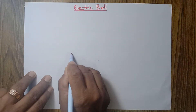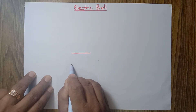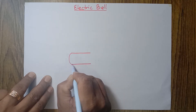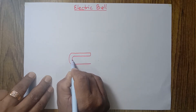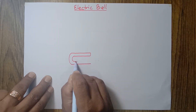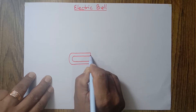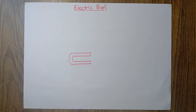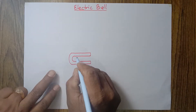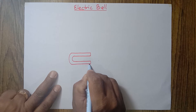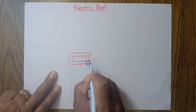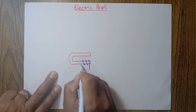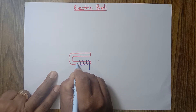An electric bell consists of a U-shaped magnet. Look at this — this is a U-shaped magnet. It is an electromagnet because it is wound with electric wire like this. It is wound with insulated copper wire on both sides.